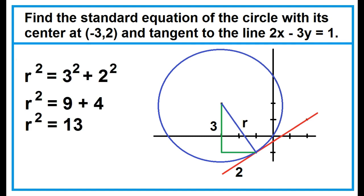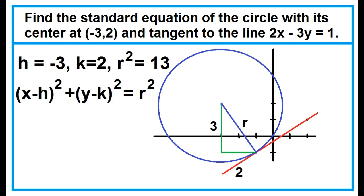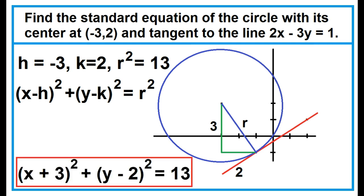Using the formula: r squared equals 3 squared plus 2 squared, so r squared equals 13. Substituting the values of h, k, and r squared into the standard form — x minus h quantity squared plus y minus k quantity squared equals r squared — the equation is x plus 3 quantity squared plus y minus 2 quantity squared equals 13.